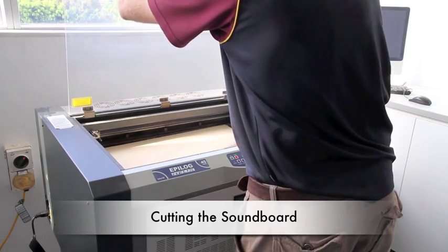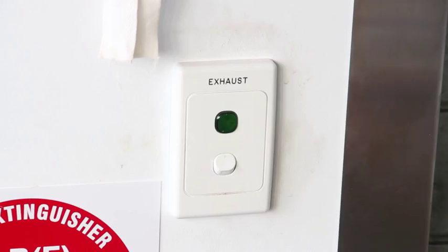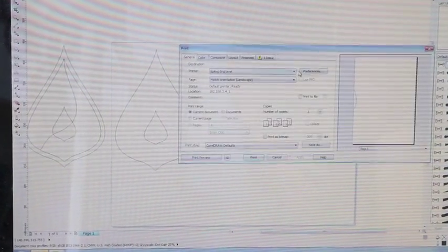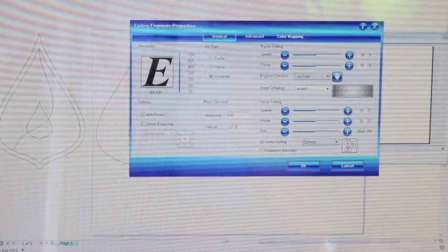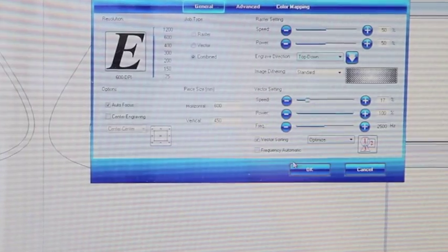I can put that into the laser cutter and get ready for printing. Make sure the laser cutter is turned on and turn on the exhaust. Adjust the speed and power settings to suit the material you're using and begin cutting.